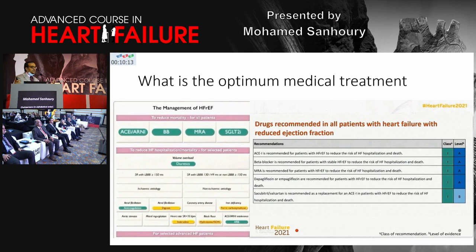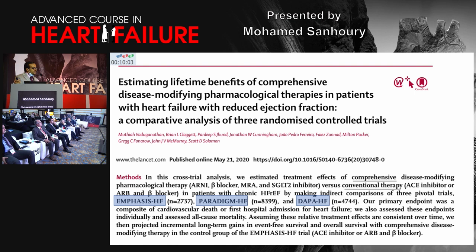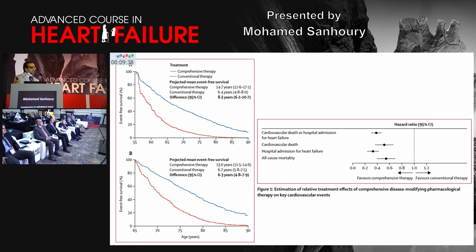If we can initiate all four drugs together, this will be very beneficial for the patient. An interesting analysis including three landmark large trials — EMPHASIS-HF, PARADIGM-HF, and DAPA-HF — compared a comprehensive medical approach (ARNI, mineralocorticoid receptor antagonist, SGLT2 inhibitors) versus the conventional therapy of ACE inhibitor or ARB, beta blocker, and mineralocorticoid receptor antagonist. It found superior efficacy of the comprehensive medical approach in reducing cardiovascular mortality and hospitalization.